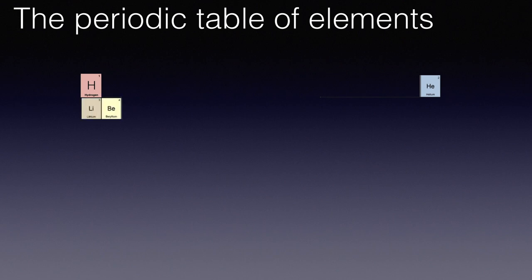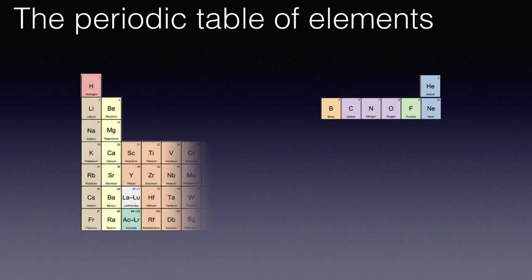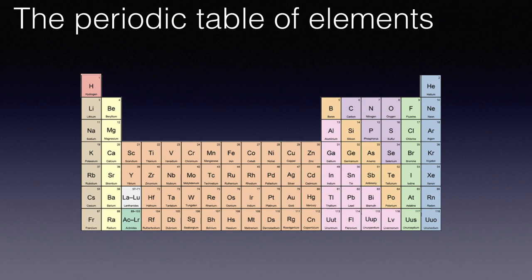The next row is then made up with lithium, beryllium, boron, carbon, nitrogen, oxygen, fluorine, and finally neon. And this goes on throughout the whole 118 known elements.